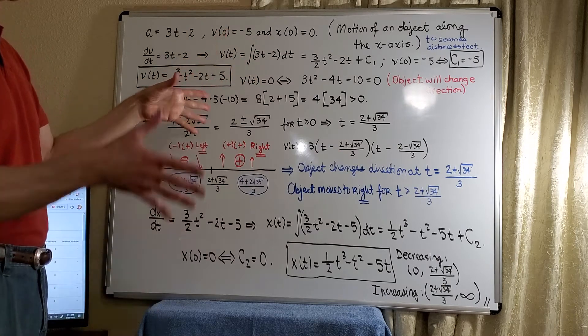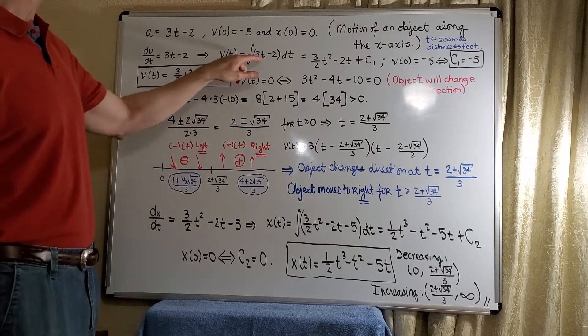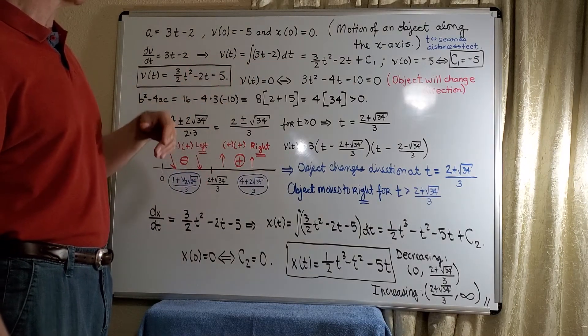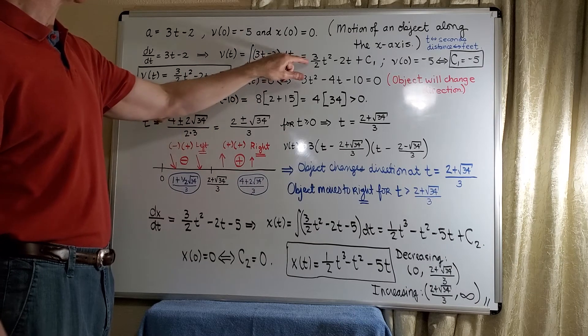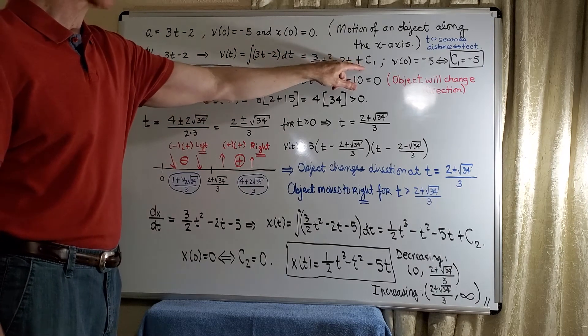We'll anti-differentiate the 3t minus 2. We'll add up all the constants and put them on one side because we're lazy. This is just real simple: add 1, divide by the new power. So we're going to get 3/2 t squared minus 2t plus an arbitrary constant.